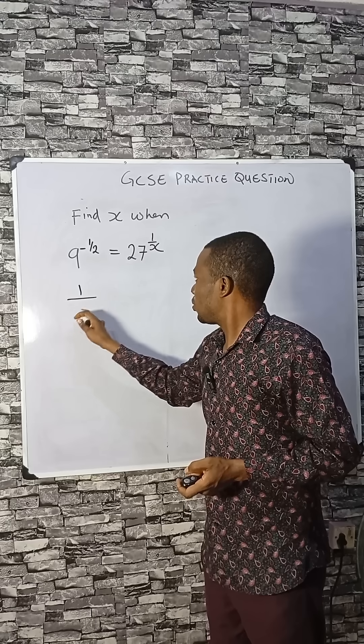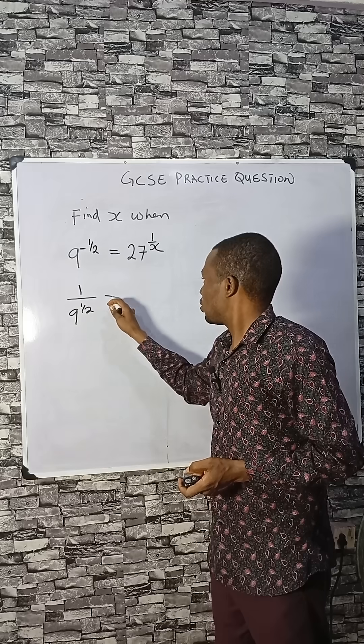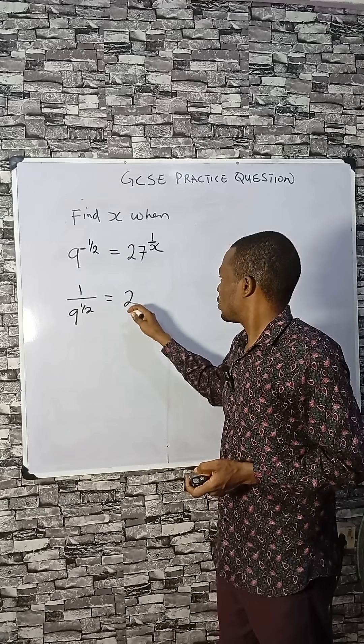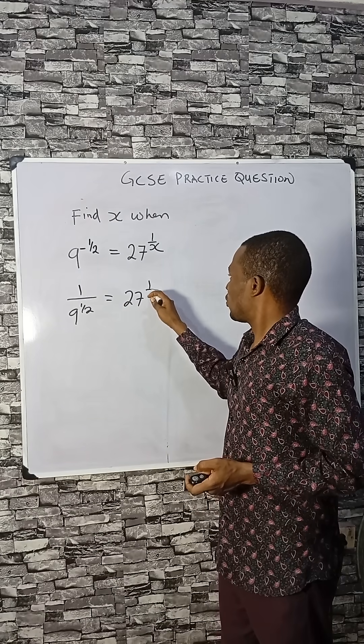That will be 1 divided by 9 raised to the power of a half equals to 27 raised to the power 1 over x.